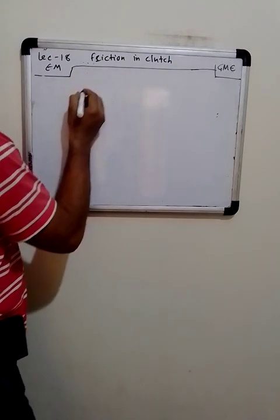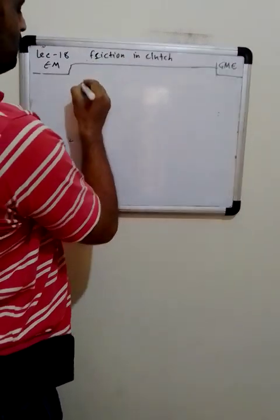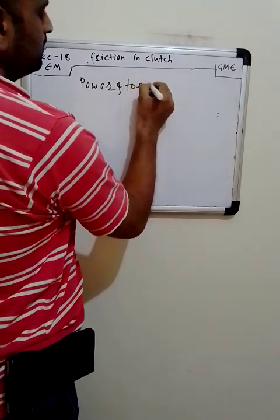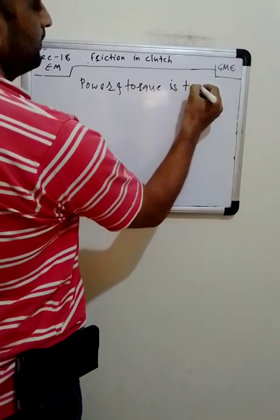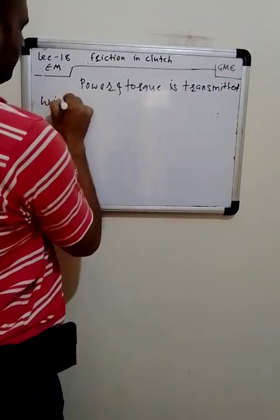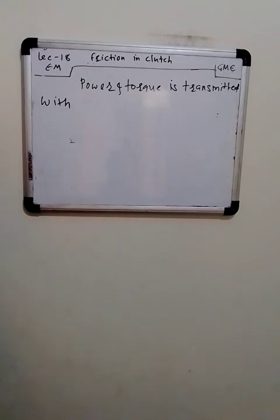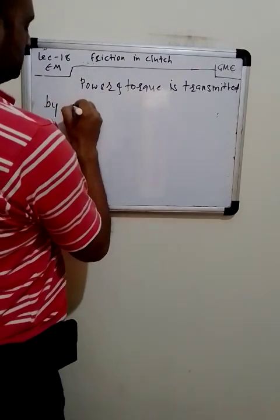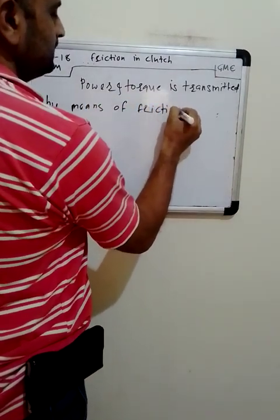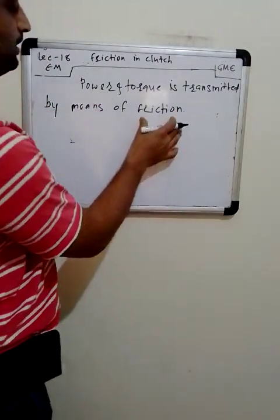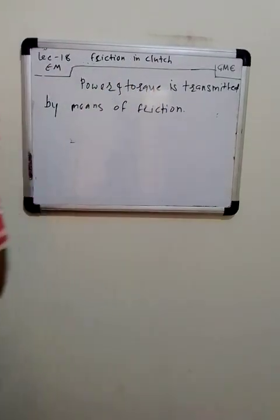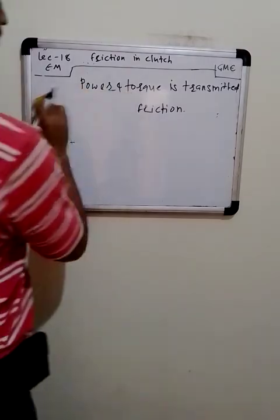With the help of friction, we will transmit power and torque. Power and torque is transmitted by means of friction. That's why friction is very important — see how beautifully the friction concept transports the power and the torque. First we will see the definition of the clutch — how the clutch is defined.